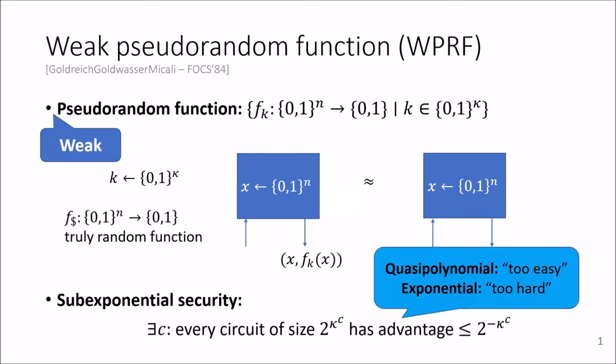For quasi-polynomial security you get a completely different landscape, as you will also see on a later slide, and exponential security is often just too hard.